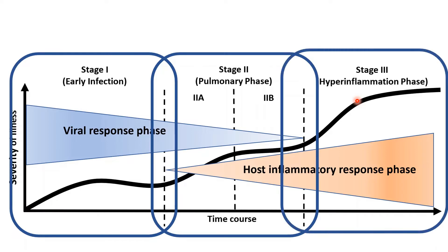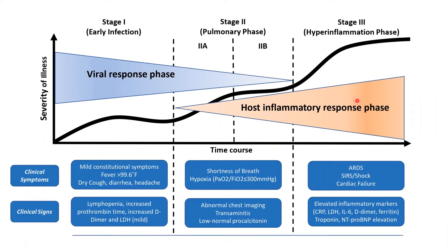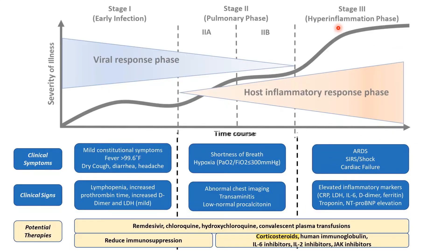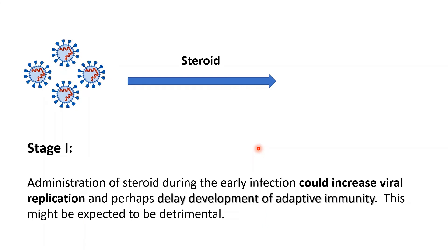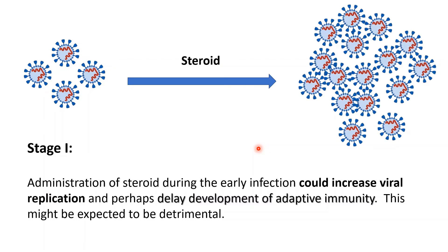Moving to Stage 3 — this is a systemic hyperinflammation state where a minority of COVID-19 patients transition from Stage 2 to Stage 3, and prognosis is bad. In Stage 2, the pulmonary phase, patients will have sudden clinical deterioration and progress to ARDS. Markers of systemic inflammation are moderately elevated. Some immunosuppression may be beneficial. Giving steroids in Stage 1 is difficult to suggest, as steroids during early infection could increase viral replication and perhaps delay development of adaptive immunity.